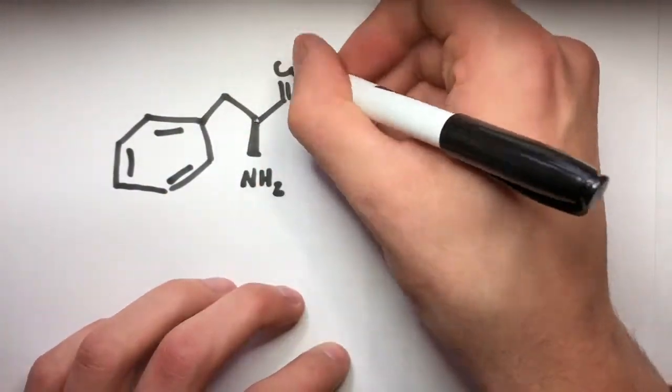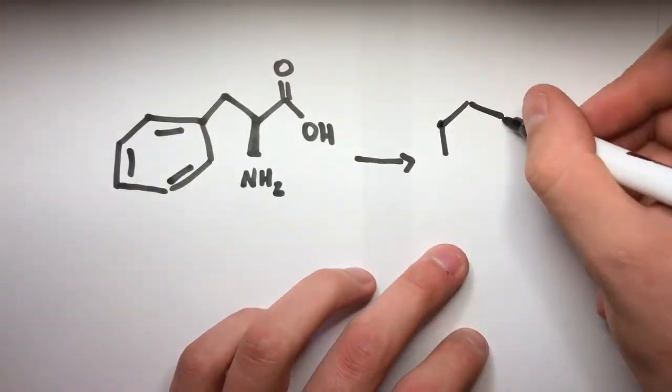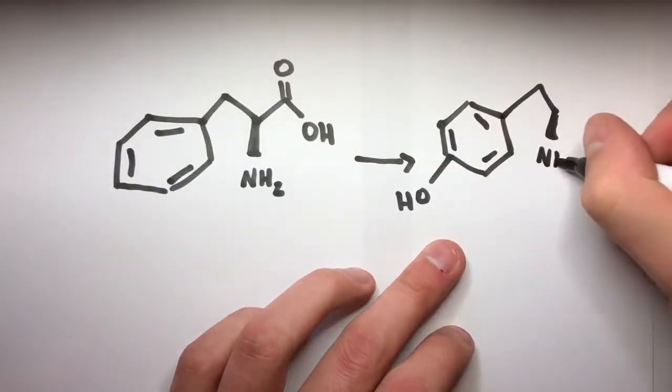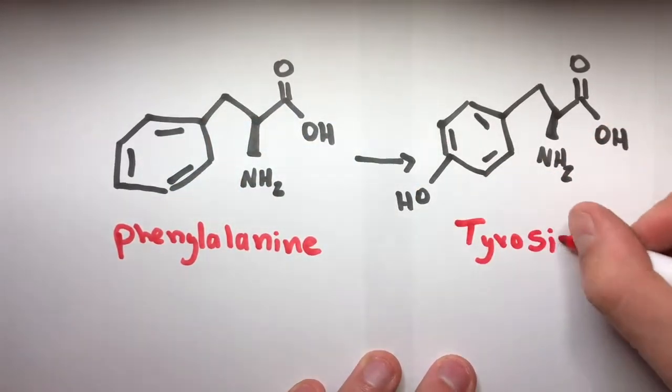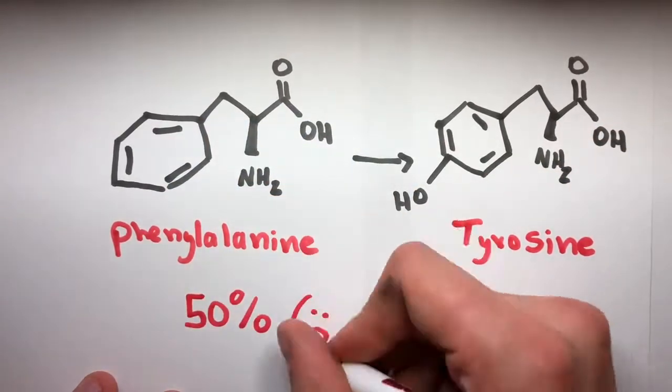The synthesis of epinephrine stems from amino acids phenylalanine and tyrosine. Phenylalanine is an essential amino acid, which means it must be obtained from our diet. 50% of all dietary phenylalanine is used for synthesizing tyrosine in the first step of epinephrine synthesis.